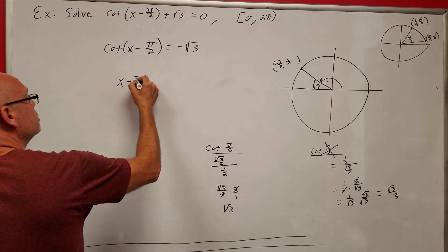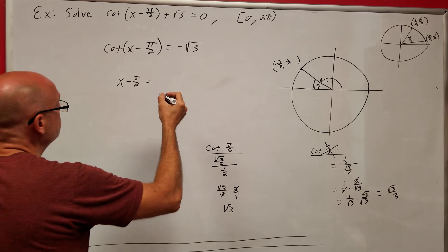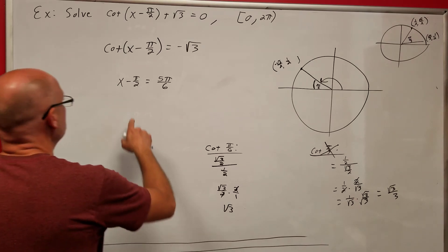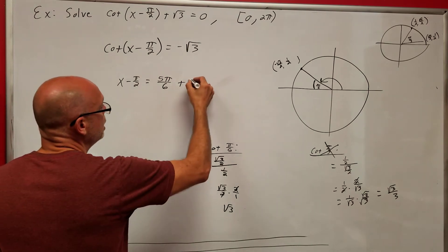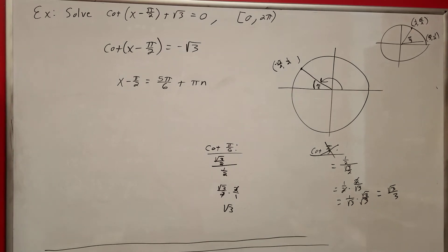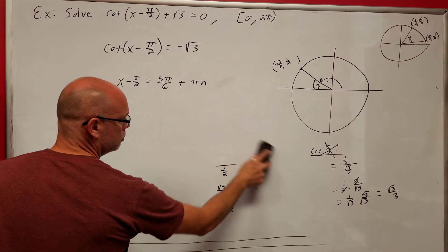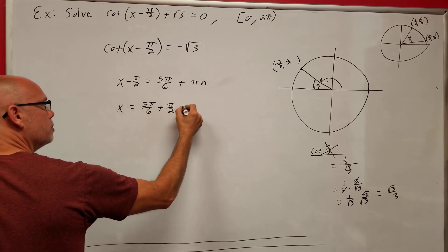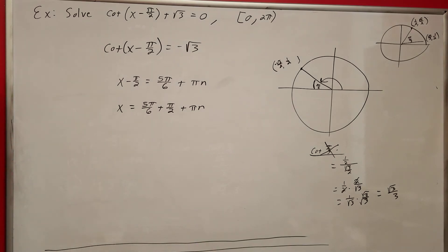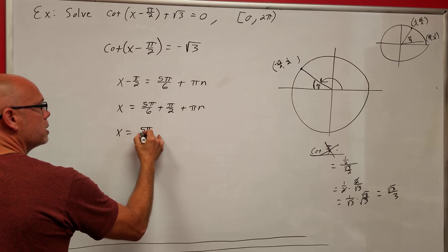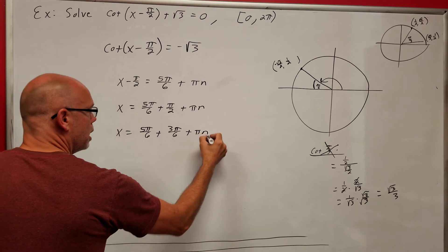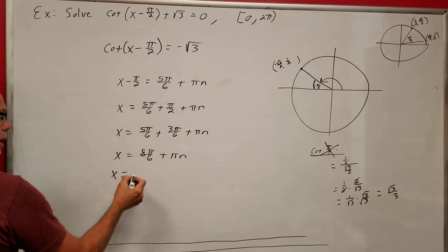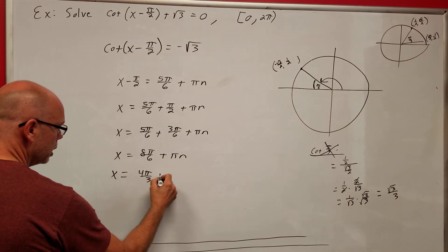So cotangent of (x − π/2) equals −√3 at argument 5π/6. For cotangent I add plus πn since the period is π. Now solving for x: add π/2 to both sides, so x = 5π/6 + π/2 + πn = 5π/6 + 3π/6 + πn = 8π/6 + πn = 4π/3 + πn.